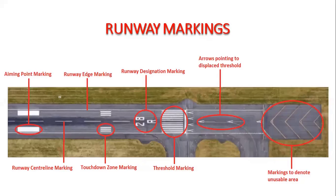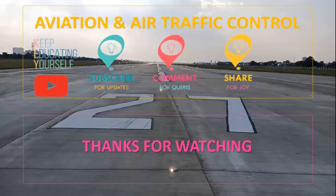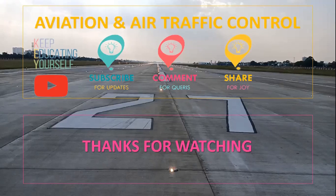To summarize, we covered runway centerline markings, touchdown zone markings, threshold markings, runway designator markings, runway edge markings, aiming point markings, displaced threshold, and chevron markings. This completes our runway markings section. Hope you have enjoyed it — thanks for watching. Please share your views in the comment section, and if you like this video make sure to subscribe to the Aviation and ATC Keep Educating Yourself channel. Have a great day.